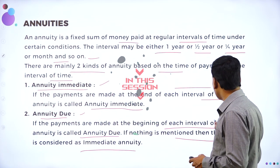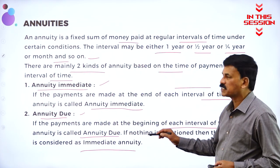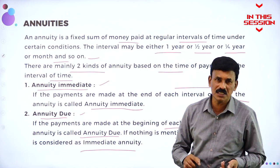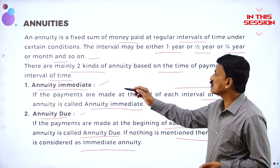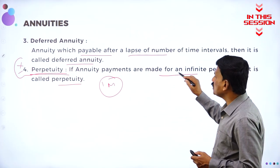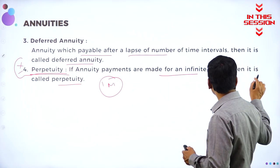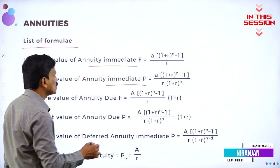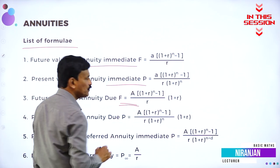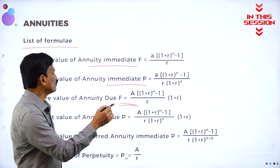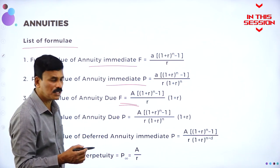If the payments are made at the beginning of each interval of time, one is at the end of the year, another one is at the beginning of the year, then such annuities are called annuity immediate and annuity due. Perpetuity means if the annuity payments are made for an infinite number of periods, then it is called a perpetuity. The future value of annuity due is determined using the formula: F equals A into (1 plus R) to the power of N minus 1, divided by R, into (1 plus R).